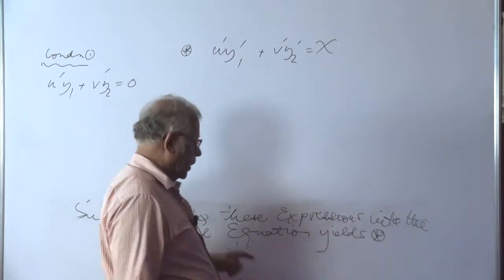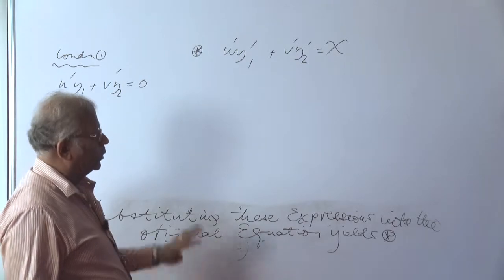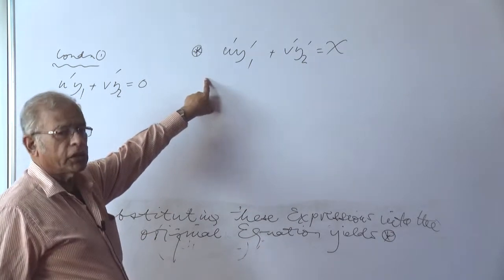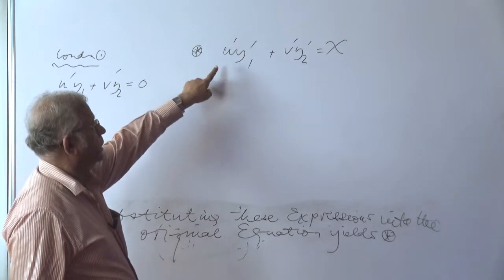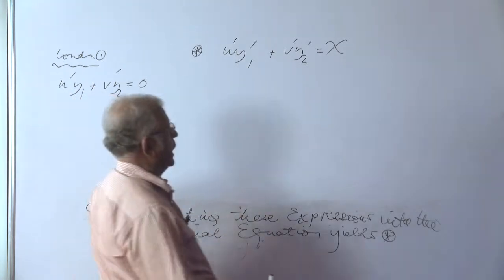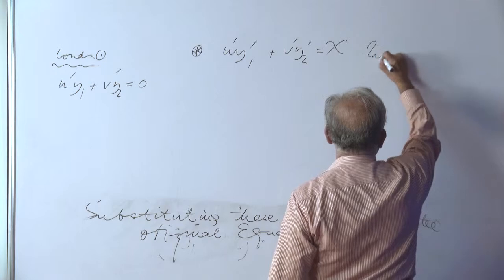It will be found that once we substitute those expressions derived into the original equation, the other option that remains is only that u dashed y1 dashed or v dashed y2 dashed must add up to x. This is actually the second condition.